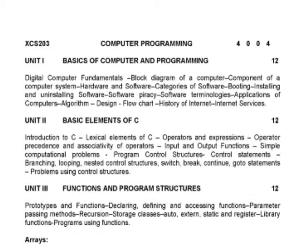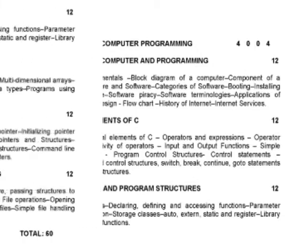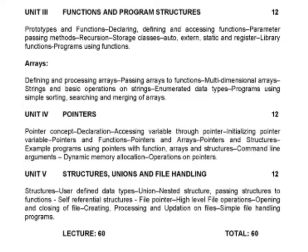In the second unit, we cover the structure of C program, expressions, operators, and different types of control structures. In the third unit, we handle different types of functions, recursions, and arrays. In the fourth unit, we handle different types of pointers and programs related to pointers. The fifth unit covers structures, unions, and file handling.